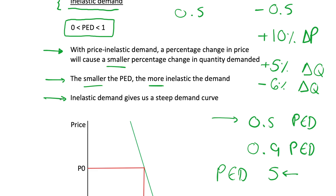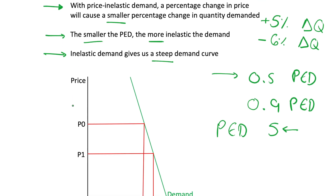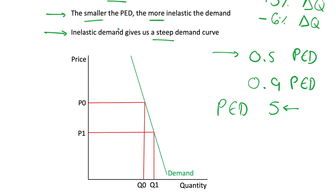The final point — again the opposite of elastic — inelastic demand gives us a steeper demand curve. We can see this on the diagram: this is quite an inelastic demand curve. Our elastic demand curve looked flatter, something like a straight line angled gently. Now that we've got more inelastic, we have a steeper demand curve.